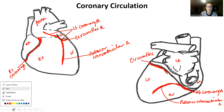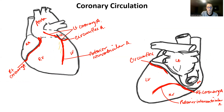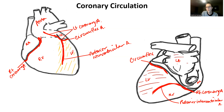If you really want to get technical: the anterior interventricular artery is going to supply the anterior portion of the left ventricle, whereas the circumflex is going to supply the left ventricle on the posterior side and also all of the left atrium on the posterior and the anterior side.